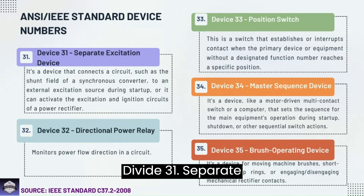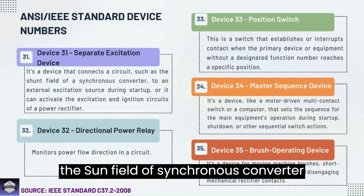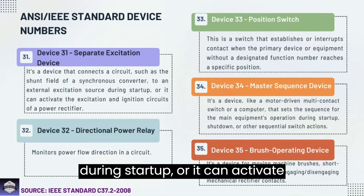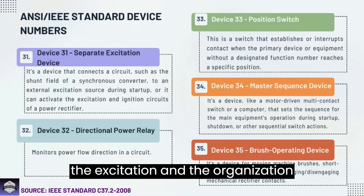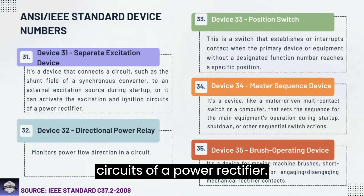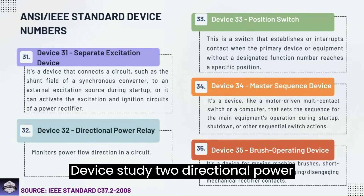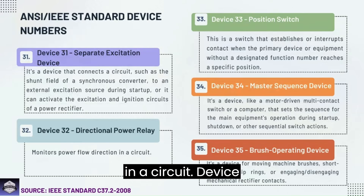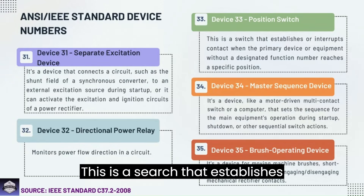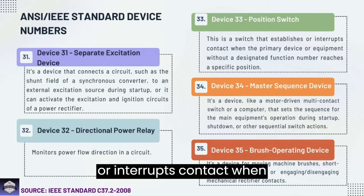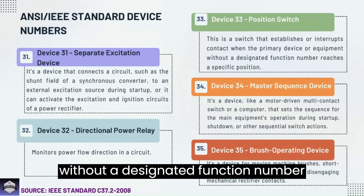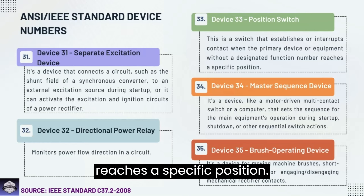Device 31: Separate excitation device — connects a circuit such as the shunt field of a synchronous converter to an external excitation source during startup, or it can activate the excitation and ignition circuits of a power rectifier. Device 32: Directional power relay — monitors power flow direction in a circuit. Device 33: Position switch — a switch that makes or interrupts a contact when the primary device or equipment reaches a specific position.